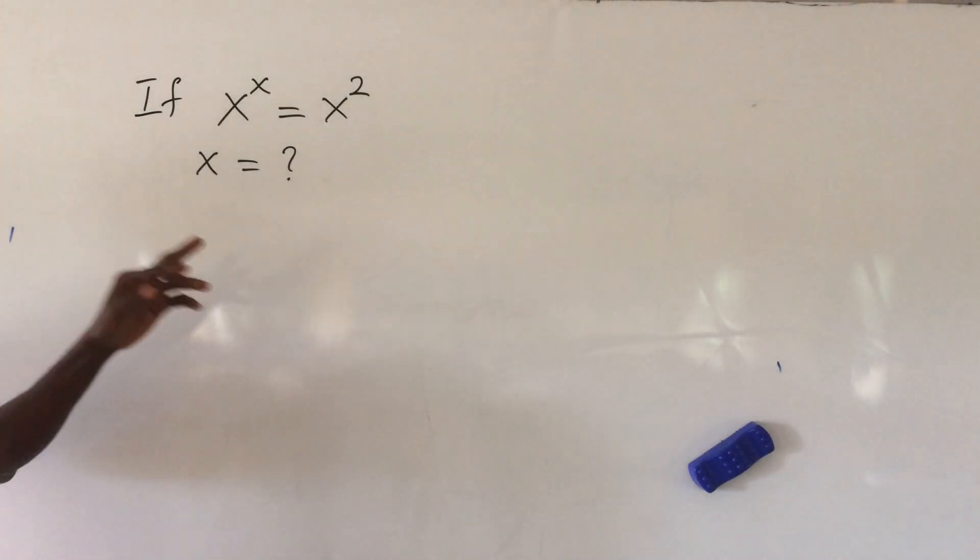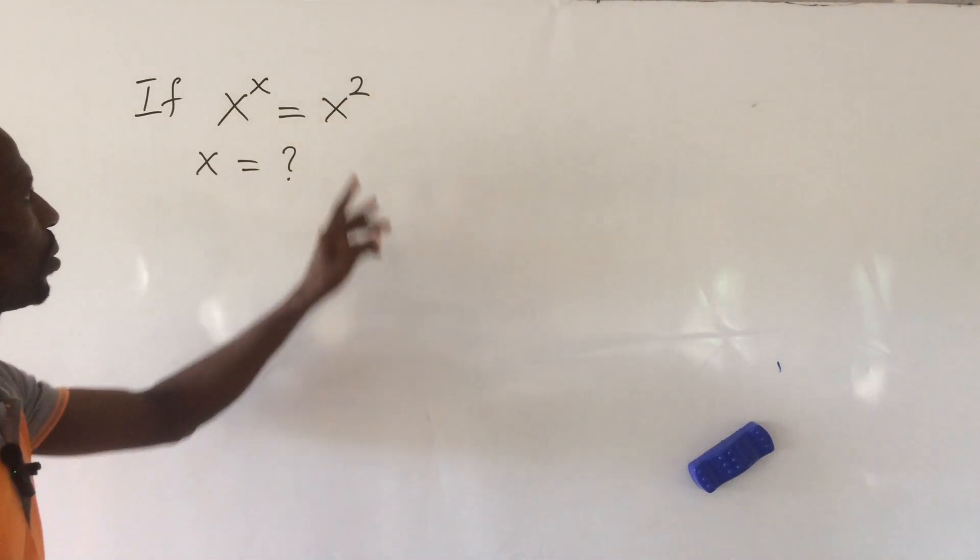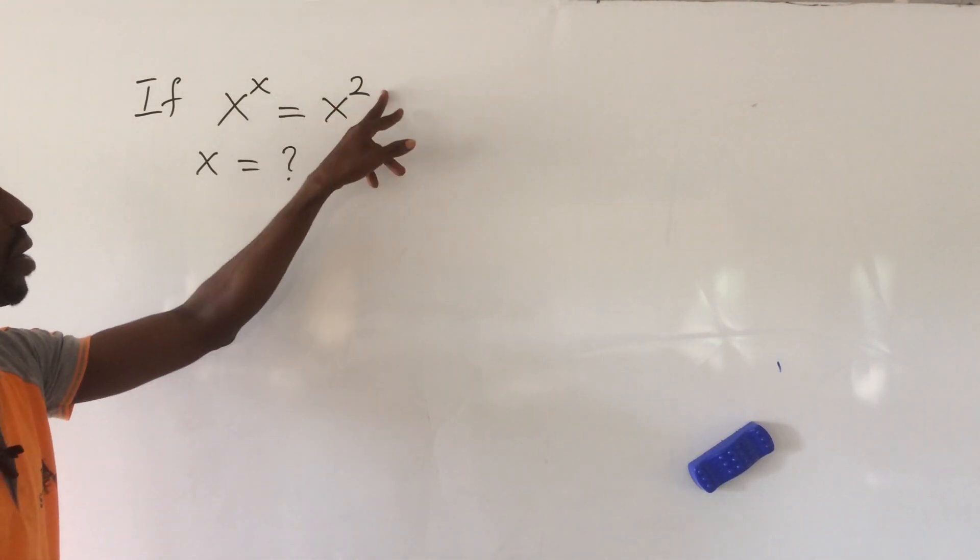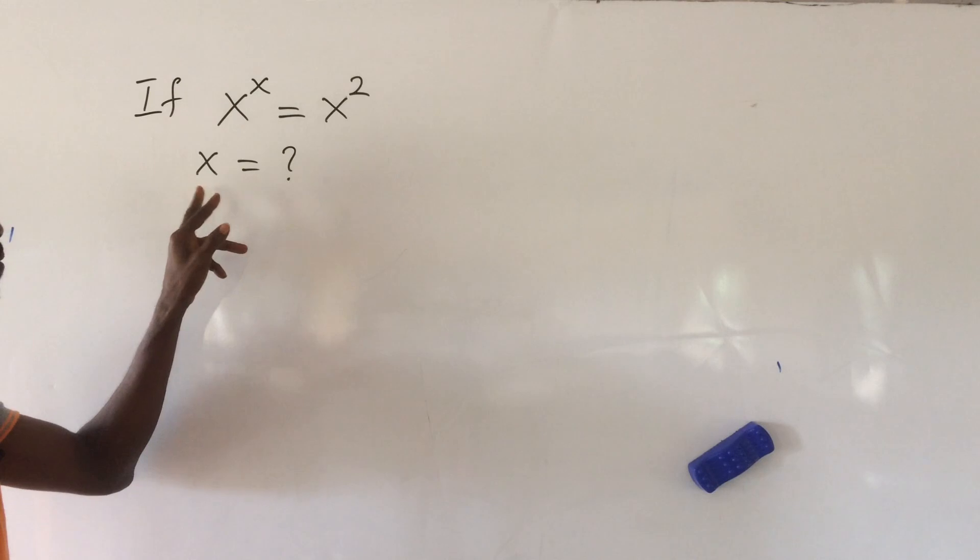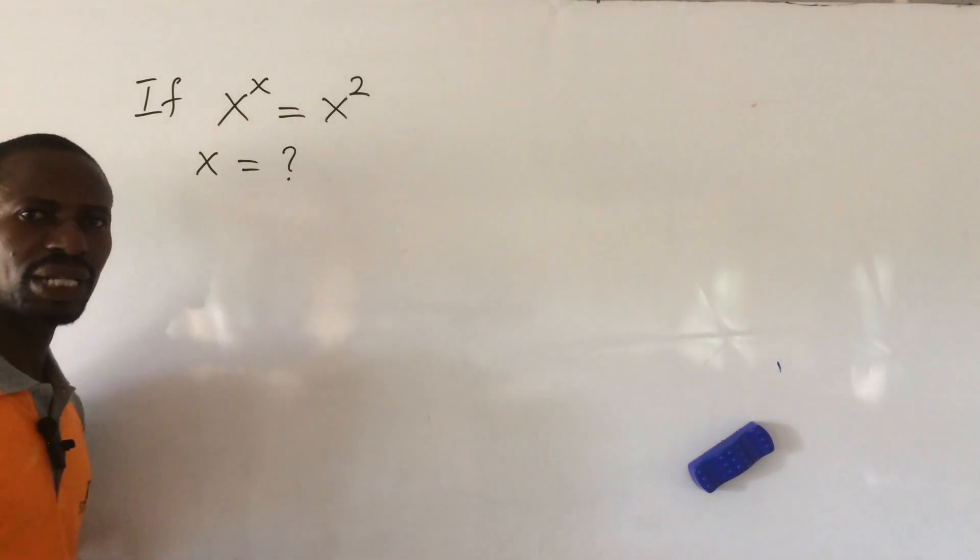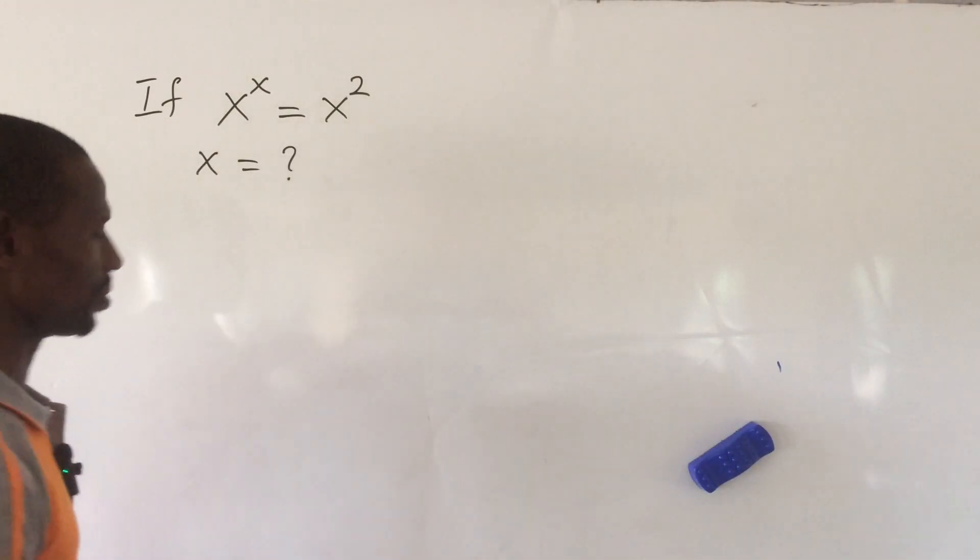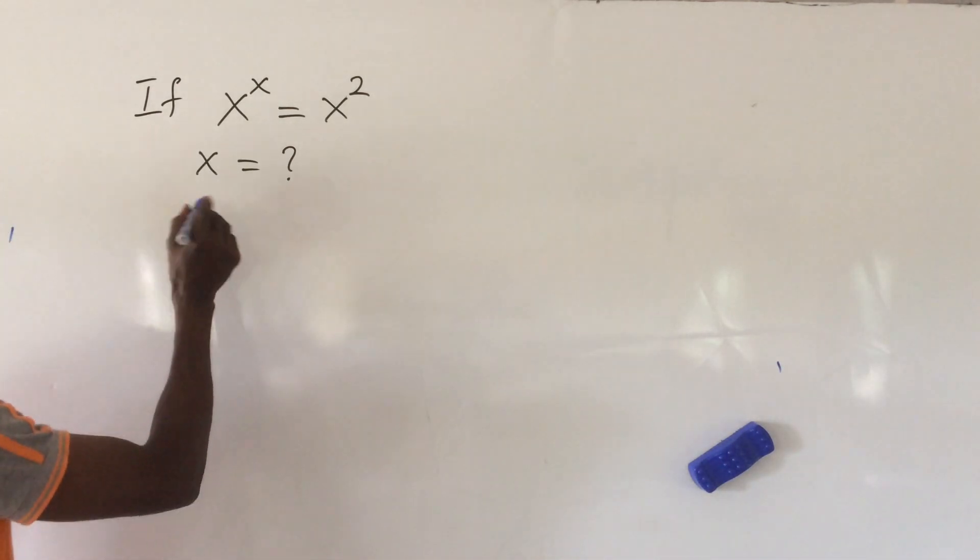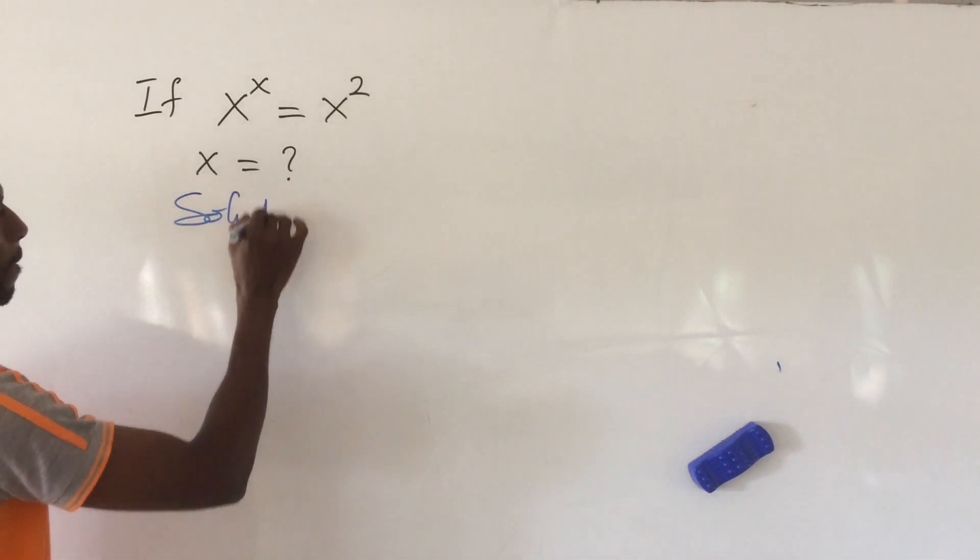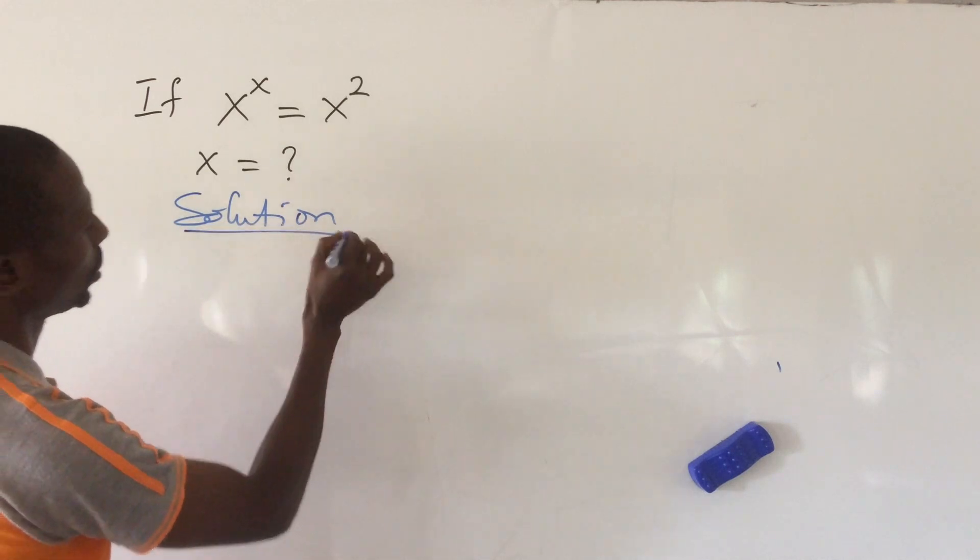So let's go into today's challenge. Here we have if x to the power of x equal to x to the power of 2, therefore x is equal to what? So how do we now handle this? Very simple. We'll take our solution.